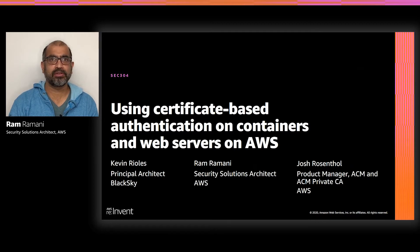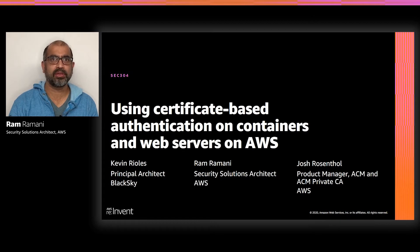I'm Ram Ramani, a Security Solutions Architect with AWS, and I'm here with Kevin Riolis, Senior Architect from Black Sky, and Josh Rosenthal, a Product Manager with the AWS Private CA Service Team. In this presentation, we're going to talk about Black Sky's experience using AWS Certificate Manager and Private Certificate Authority to issue and manage end-entity certificates for the geospatial imaging infrastructure that Black Sky provides as a service to their clients.